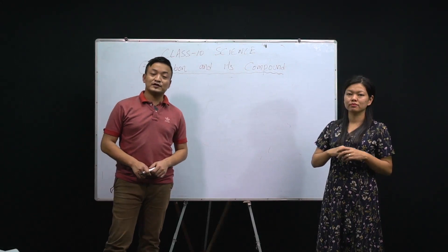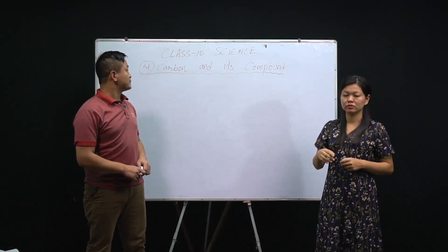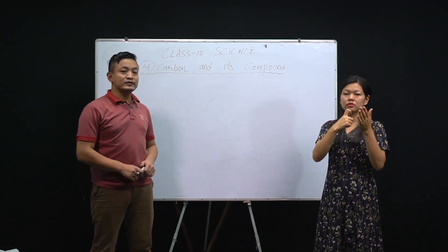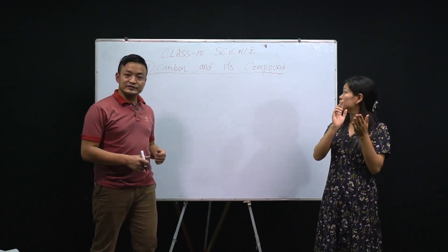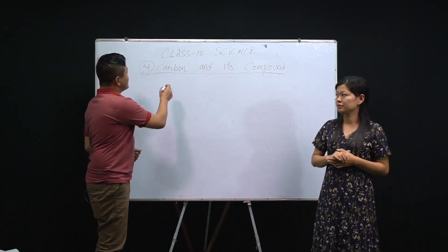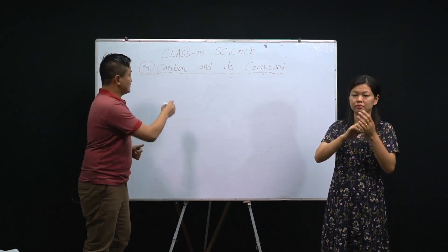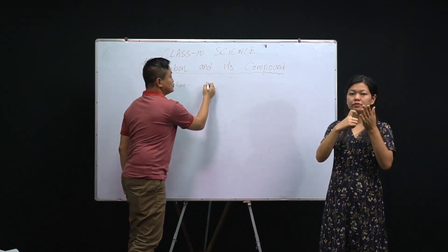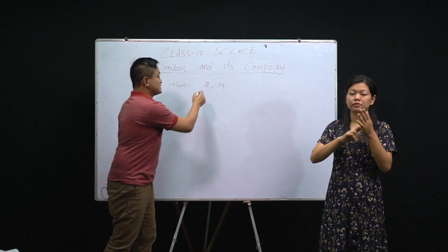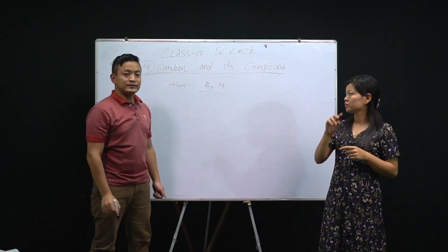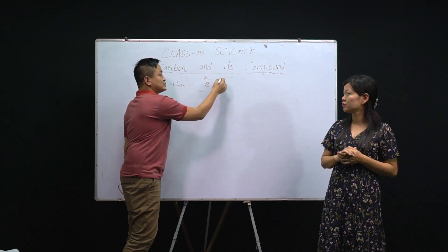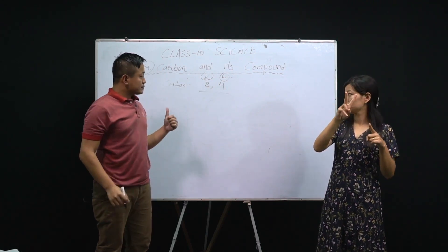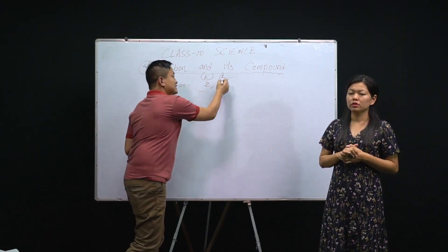Dear Class 10 students, we'll start with our new chapter today - Chapter 4: Carbon and its Compounds. This is one of the longest chapters but very important. We'll start from scratch. Carbon's electronic configuration is 2,4. In the K shell we have 2, and in the L shell we have 4.